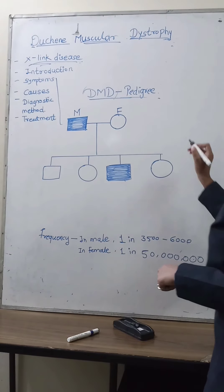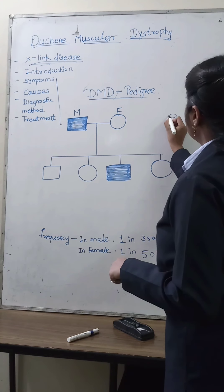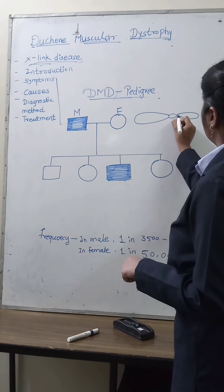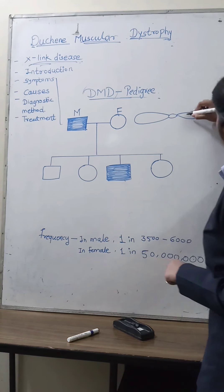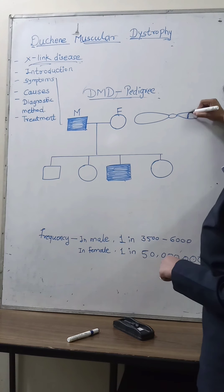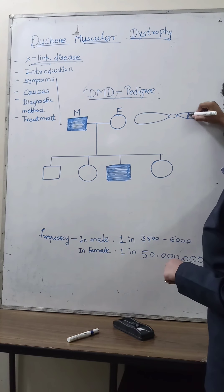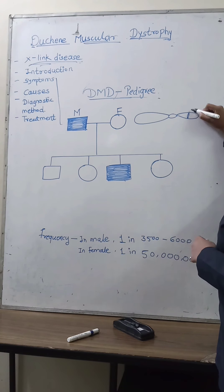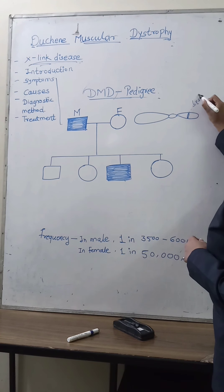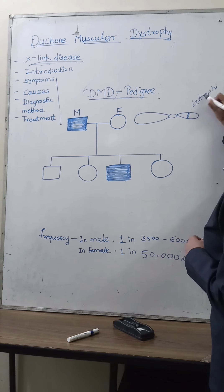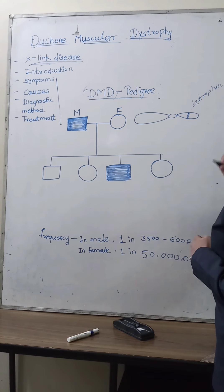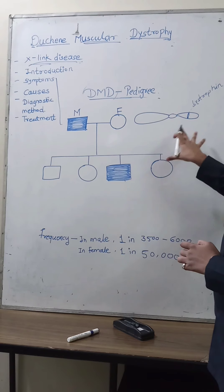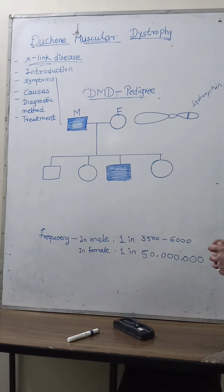These are chromosomes — with a big arm, large arm, and short arm — and here the protein dystrophin is present. There is lack of secretion of dystrophin, and hence this deficiency of dystrophin causes the disease. So this is DMD.